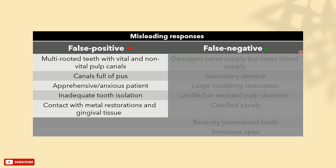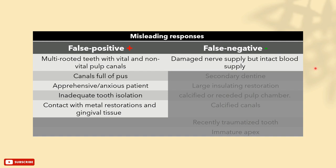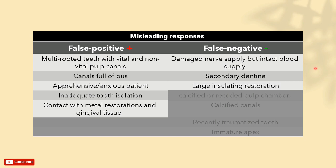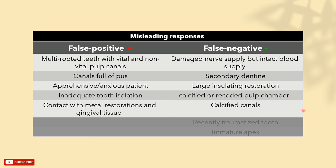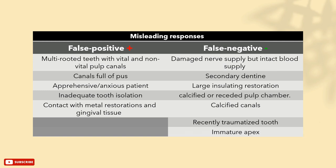False negative responses mean the patient experiences no pain to the stimulus, but it does not mean the tooth is non-vital. This can occur in cases of damaged nerve supply but intact blood supply — the problem is in the nerve itself, not the tooth. Other causes include secondary dentin formation with decreased permeability, large insulating restorations inside or around the tooth, calcified or receded pulp chamber and calcified canals, recently traumatized teeth where trauma causes loss of access to nutrients and blood flow resulting in numbness, and premature apex.